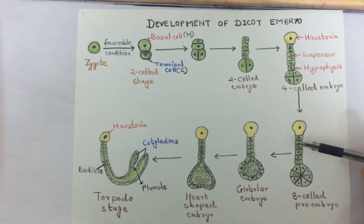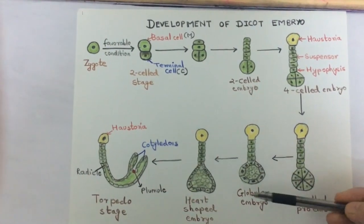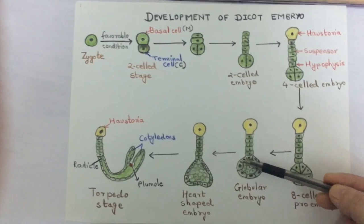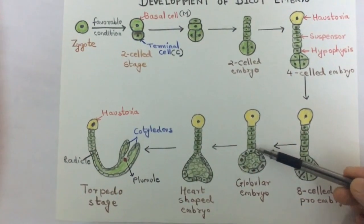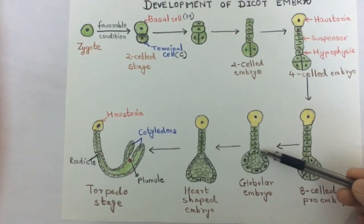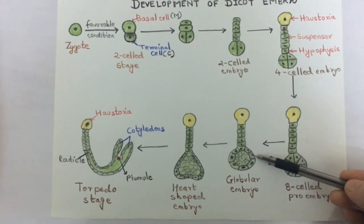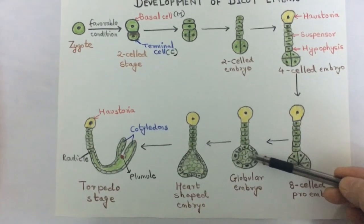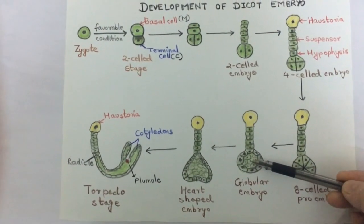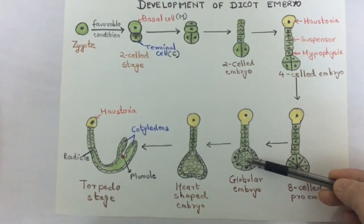After the eight-cell pro-embryo, it develops into the globular-shaped embryo. The outermost layer divides anticlinally, forming the dermatogen, which further leads into the epidermis. Below the dermatogen is the periblem layer, and in the center is the plerome layer.